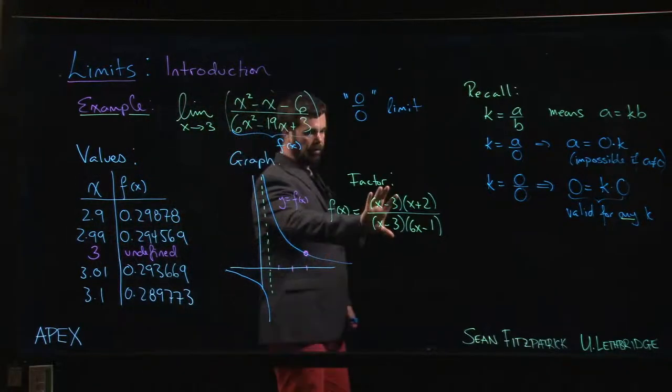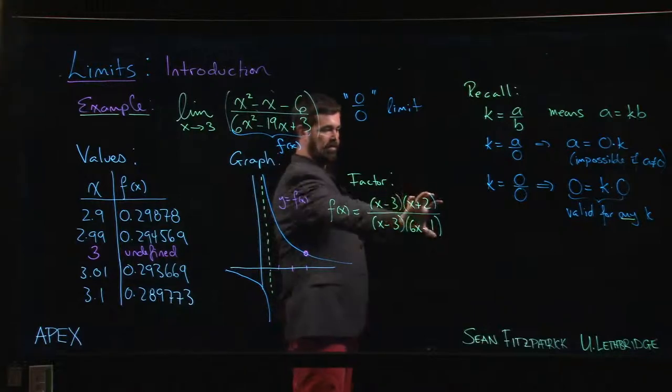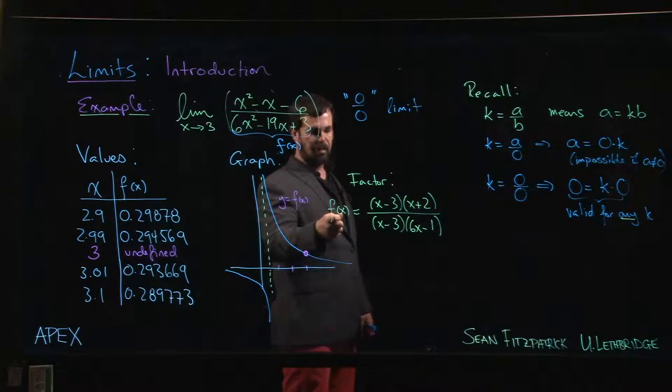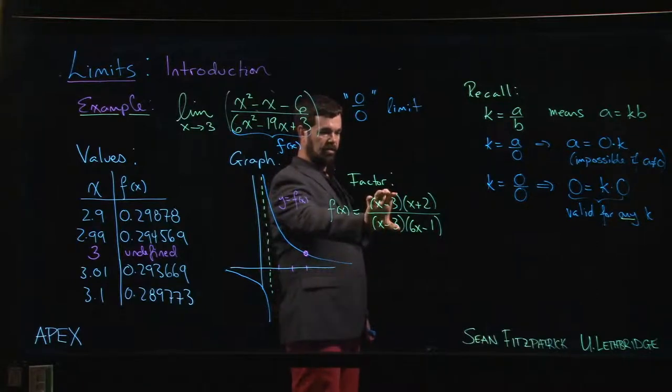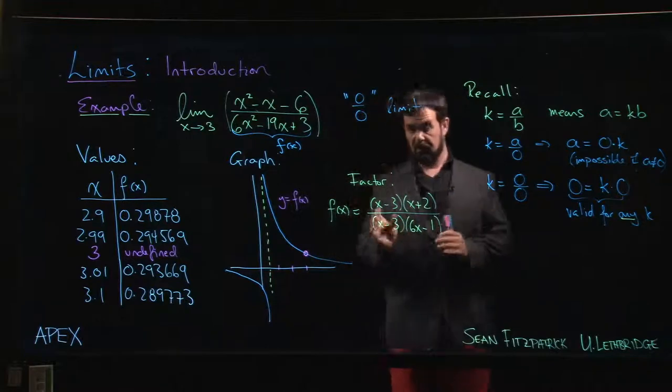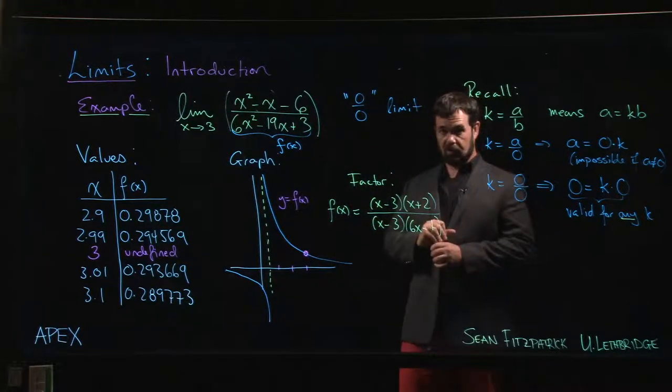The trouble is that if I cancel those x minus threes and just leave this part, I can't actually say that it's equal to f(x) anymore, because once I get rid of these two factors I've changed the domain. The thing that's left over would be defined at three, whereas my original function was not.